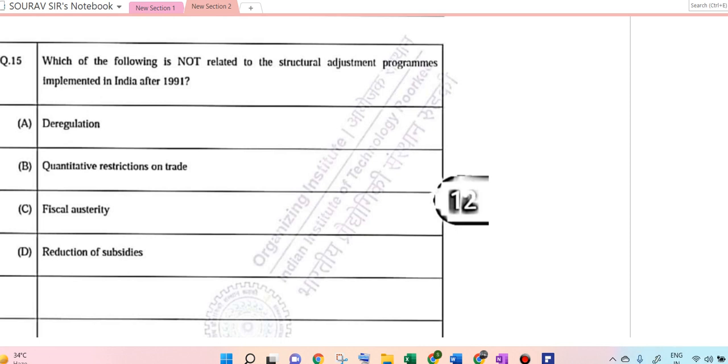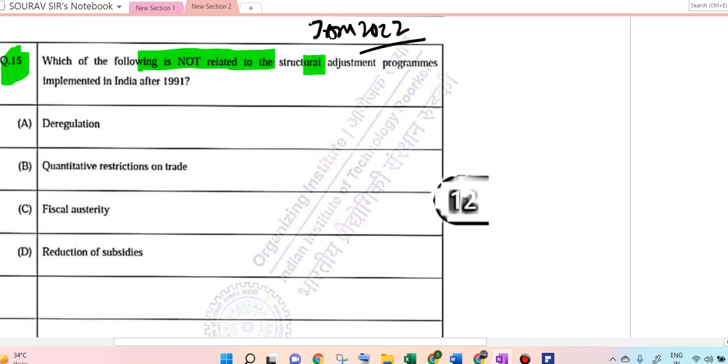Hello students, today we are solving JAM 2022 Economics paper. The first question here is number 15, which asks which of the following is not related to the structural adjustment program.